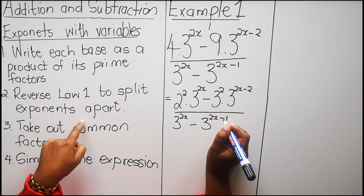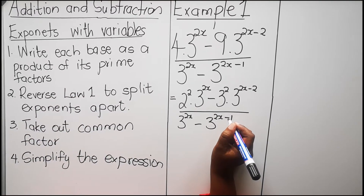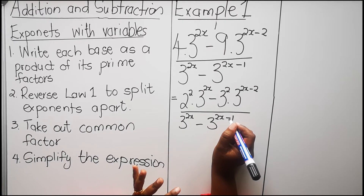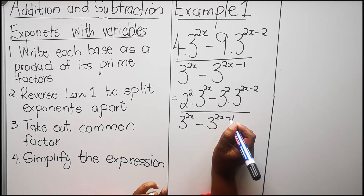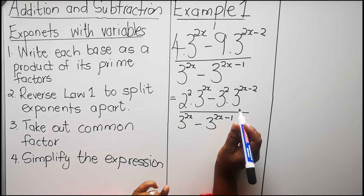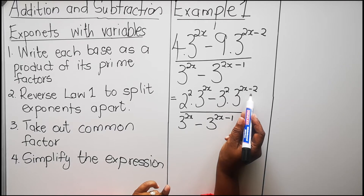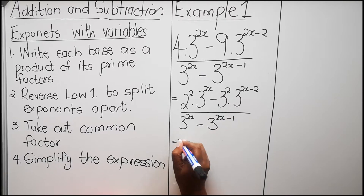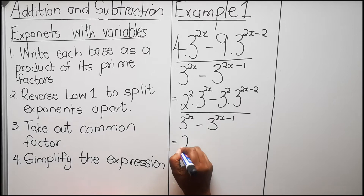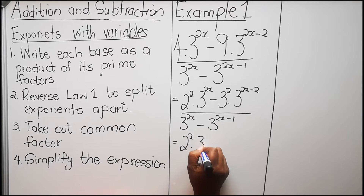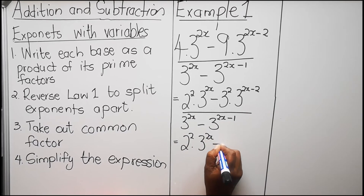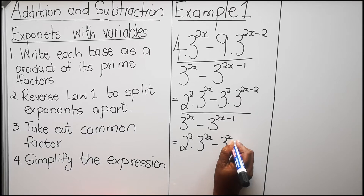The second part, we are going to reverse Law 1. Law 1 says if bases are the same, we take the same base and add the exponents. So we are going to reverse that. Instead of having one base, we are going to have two bases for each one. So this one is 2 to the power 2, then we have 3 to the power 2x minus 3 to the power 2.